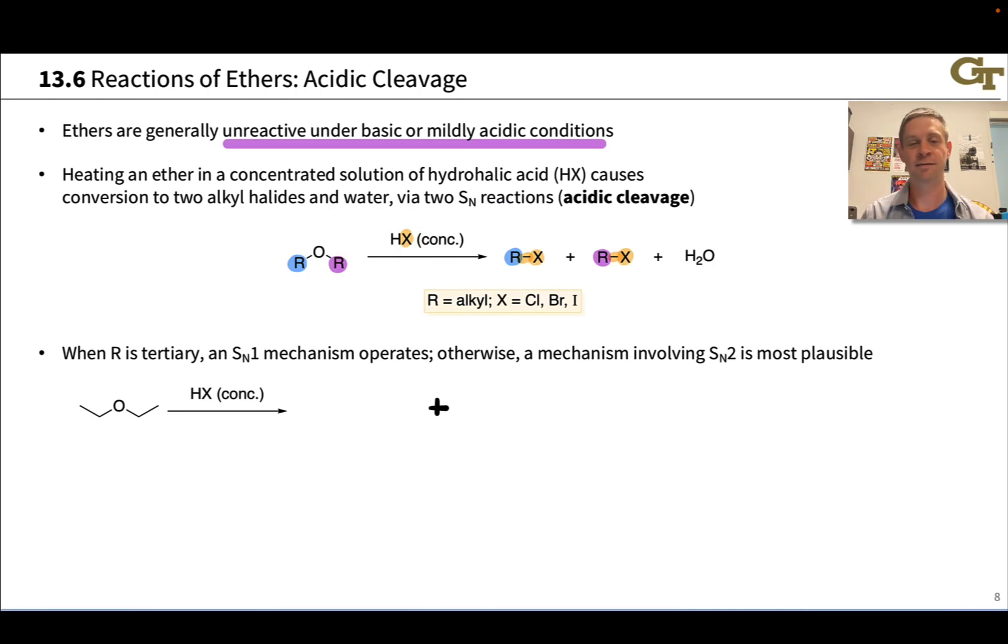And so it is important here that the R groups be alkyl groups. This will not work well at all if we've got an alkenyl or aryl ether involved. And chlorine, bromine, and iodine are the typical halogens we see here because HX needs to be a very strong acid.